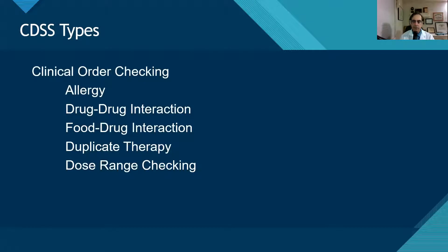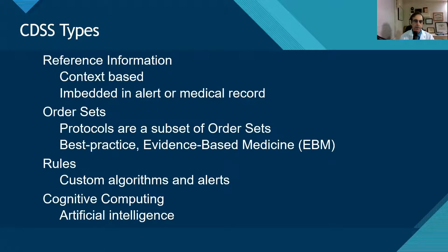The common types of clinical order checking that occur are allergy checking, drug-drug interaction, food-drug interaction, duplicate therapy, and dose range checking. You'll see these as standard types of CDS provided with most EHR systems. Then we have reference information — sometimes we have info buttons built into our systems. I also mentioned order sets, which are evidence-based medicine or best practice order sets, expert rules, and now in the modern day we're seeing more artificial intelligence or cognitive computing to help with screening and verifying orders.